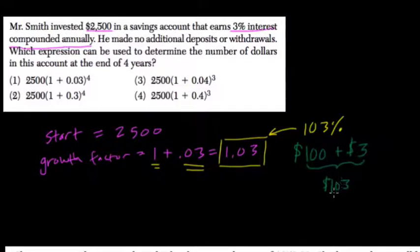So originally you had 100, now you have 103, or 103 is representing 103 out of 100, or 103%. And that's all that's going on right here. So to calculate this, you're going to multiply by 1.03 over and over again each year.